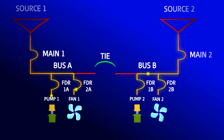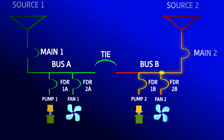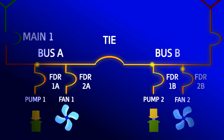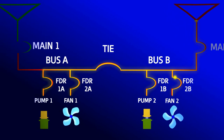In the case where the tiebreaker is open during normal operation, the loss of one source will result in the loss of half the loads. This is only temporary until the tiebreaker closes and the lost loads are powered from the remaining source.